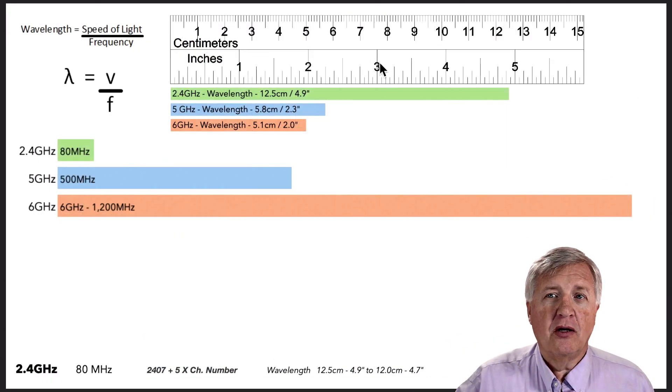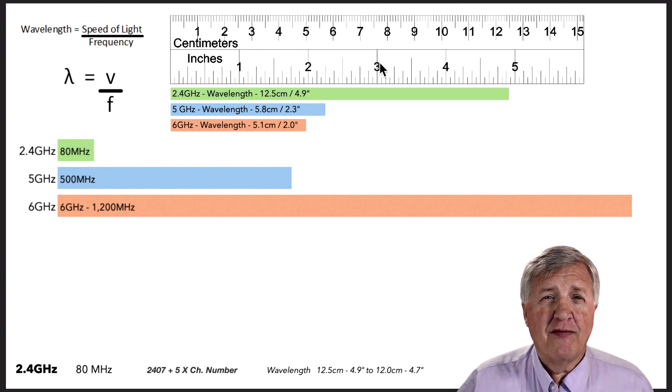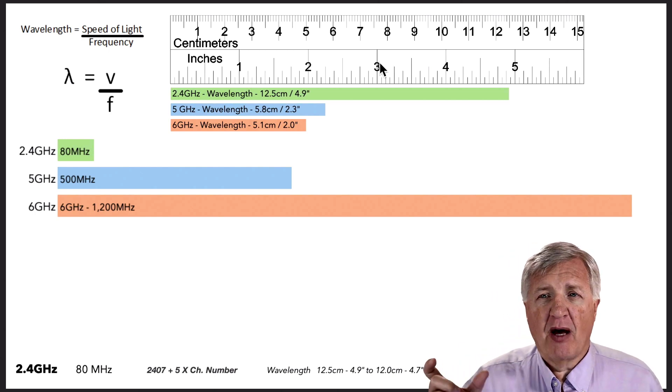If we want to see the size, we can look and see that 2.4 gigahertz is about 12.5 centimeters. It depends on whether you're on the left side or the right side. Or if you want to think in inches, about 4.9 inches. So we have a little ruler there you can look at.